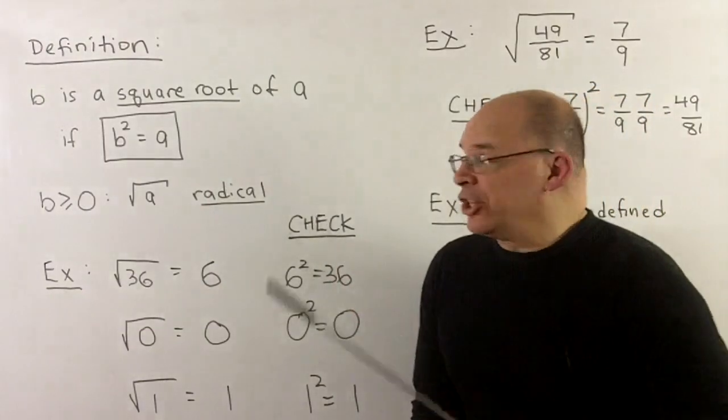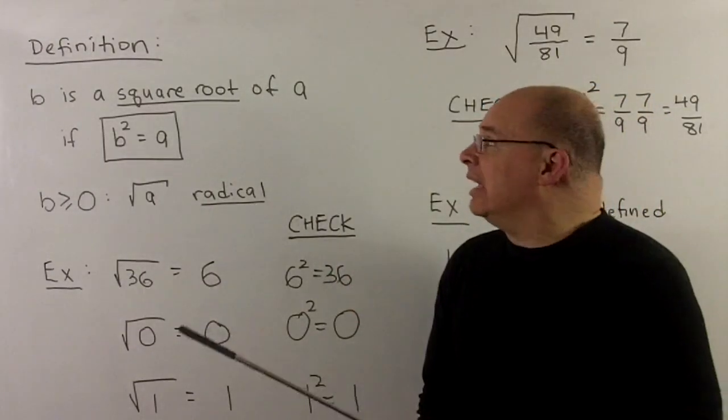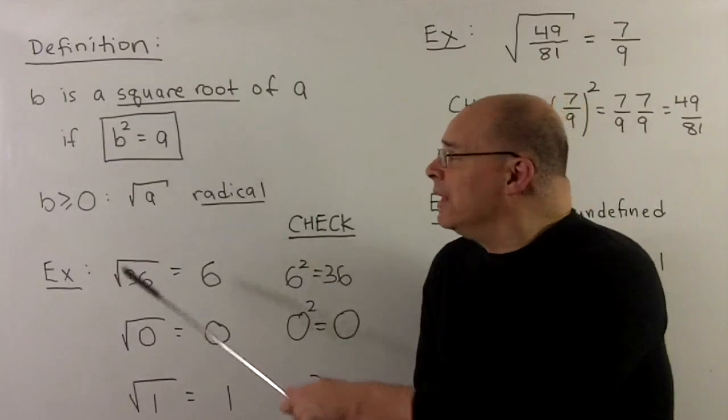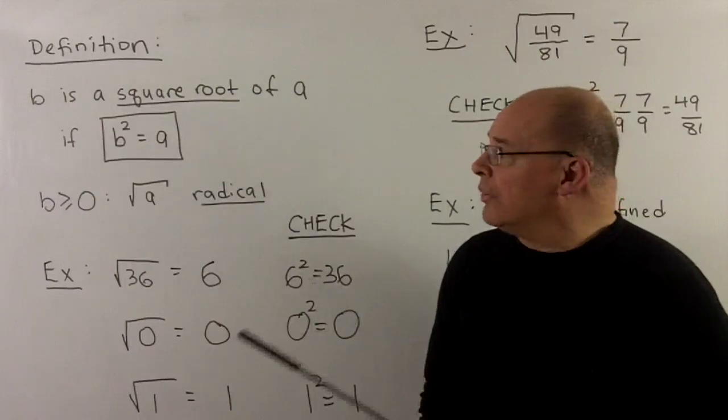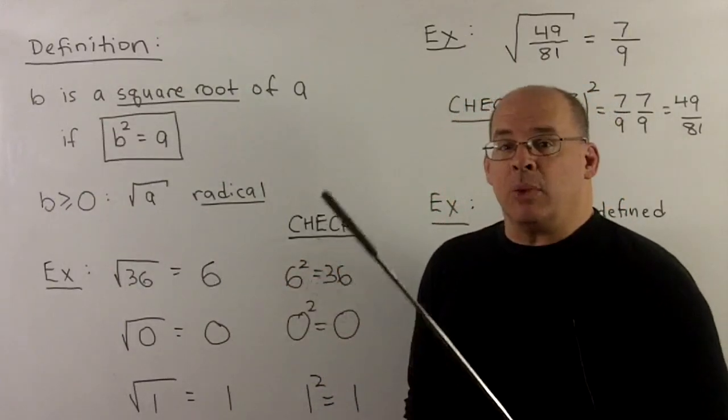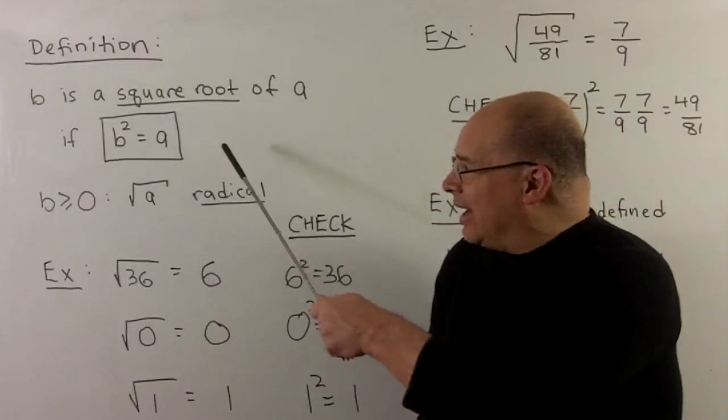So we'll start with the definition. I'll say b is the square root of a if b squared is equal to a. So the idea is if somebody gives you an a, we're looking for a b such that when you multiply it by itself, a comes out.